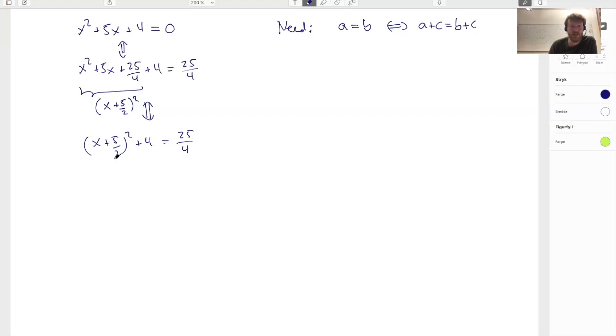And 25 fourths minus 4, that's the same as 25 fourths minus 16 divided by 4, which is 9 divided by 4. Then on the left hand side here, I have 5 halves like this.